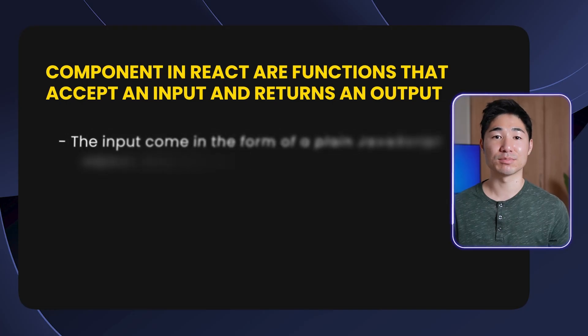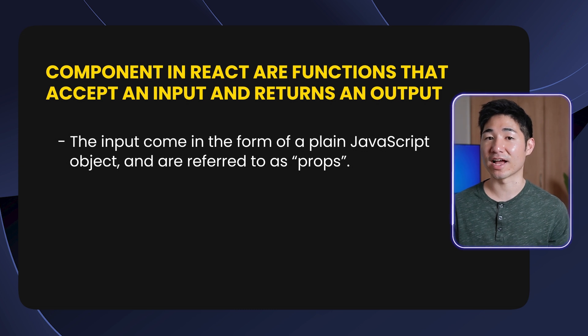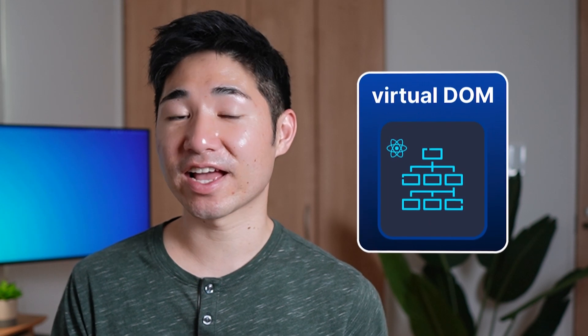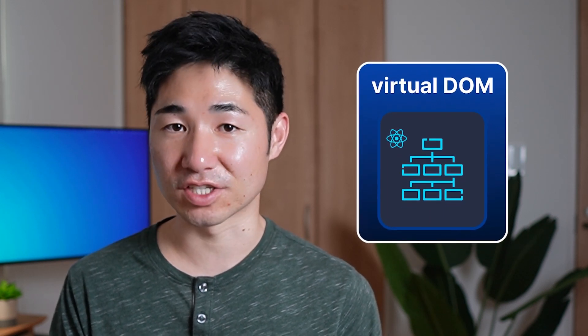React's core API has always been built around components. A component in React is a function that accepts an input and returns an output. The input comes in the form of a plain JavaScript object and is referred to as props. The output is typically written in JSX, a declarative HTML-like language. Components can optionally keep track of data over time using something called state. React has a way of turning that HTML-like output into real HTML DOM nodes using something called the virtual DOM, but you don't need to understand the details there just yet.